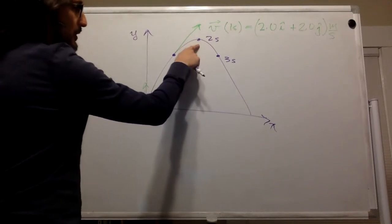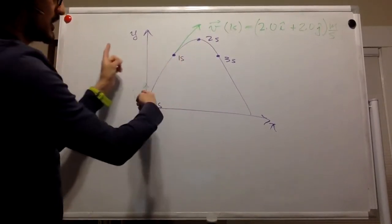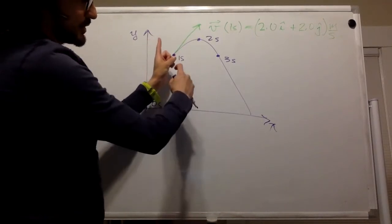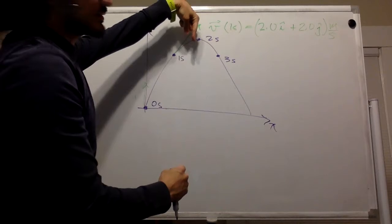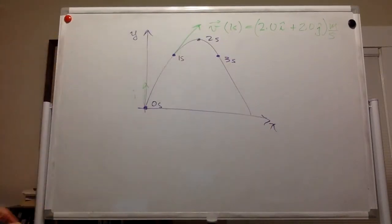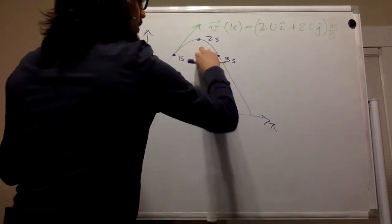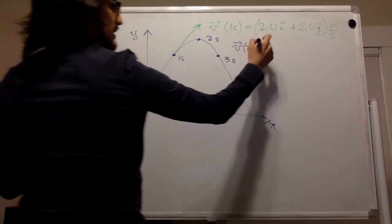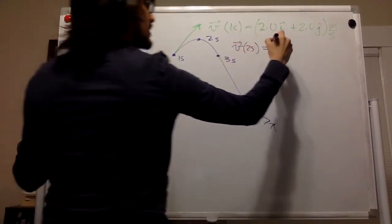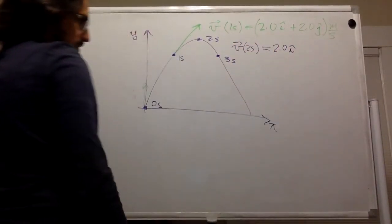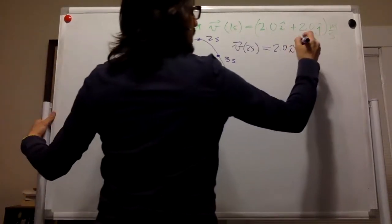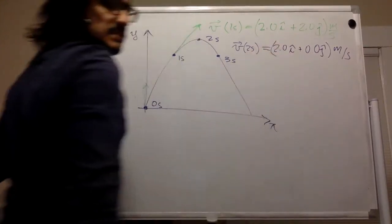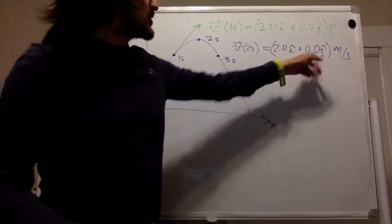This is also where the velocity is 0. So here the vertical velocity, here the velocity was up, but decreasing because of gravity. And then here, it becomes negative and starts going down. So we know that velocity at 2 seconds is equal to 2.0 in the i direction. That doesn't change. Plus 0.0 in the j direction, meters per second. And we know that is the definition of the turning point.